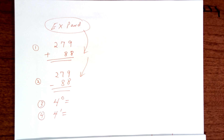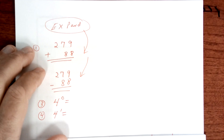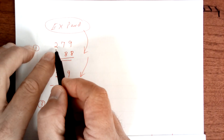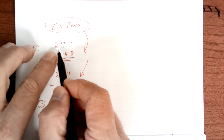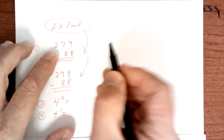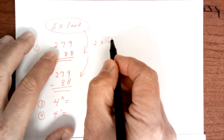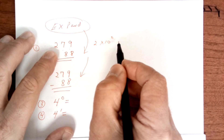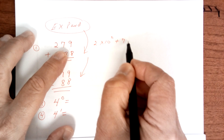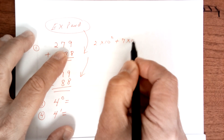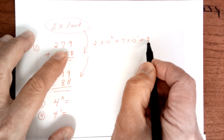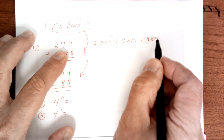Hello and good morning. Let's take a look here. I want you to expand it first. So this is in the hundredths, so it's going to be 1, 2, so it's going to be 2 times 10 to the second power plus 7 times 10 to the first power plus 9 times 10 to the zero power.